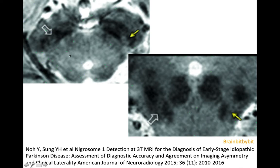In Parkinson's disease there is loss of the swallowtail sign. These are 3 tesla images used in clinical practice. On the right side, in this patient with Parkinson's disease, there is complete loss of the swallowtail. On the left side, the swallowtail is abnormal because the nigrosome appears smaller — this corresponded to the clinical symptoms, as the motor score on the right side was 1 and on the left side was 4.